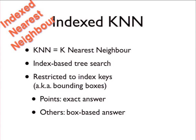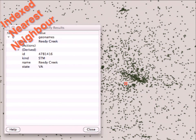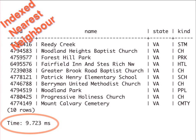PostGIS 2.0 added support for nearest-neighbor index searches — a big performance win for large tables with irregular densities. For example, with two million geonames points: find the nearest point to Reedy Creek using the special index-traversal operator in the ORDER BY clause. The key things about a nearest-neighbor search in PostGIS: tell it to use the index, and limit the results. If you don't limit, it returns the whole table sorted — which is not fast. Getting the first ten in sorted order: about nine milliseconds.